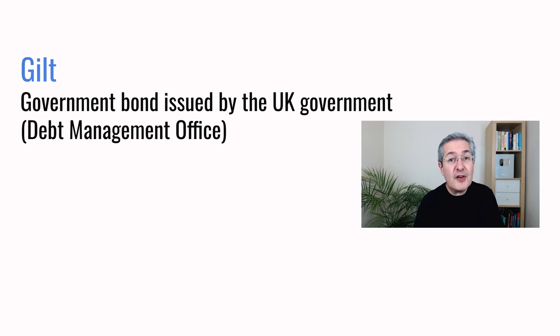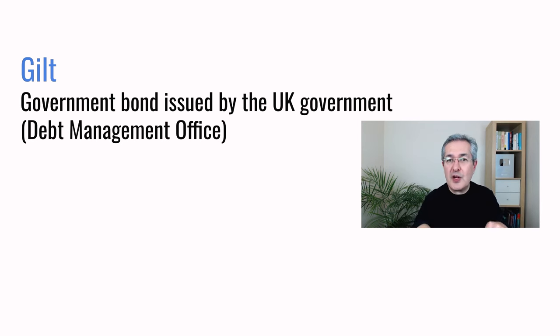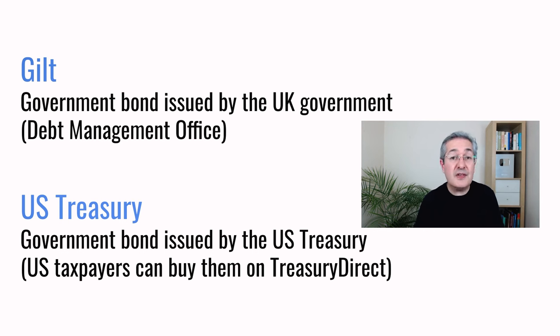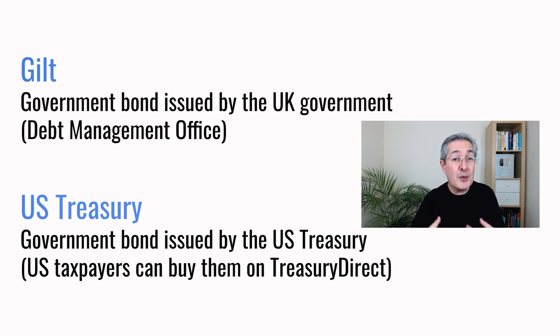A bond ladder is usually constructed with government bonds, so it's worth briefly describing how these work. In this video I'll be referring to gilts — those are UK government bonds. They're called gilts because they used to have a gilt edge around them to show how low the credit risk was from lending money to the UK government. If we're talking about US government bonds, they're usually referred to as US treasuries. If you are based in the US, you can buy government bonds directly from the government using something called Treasury Direct.